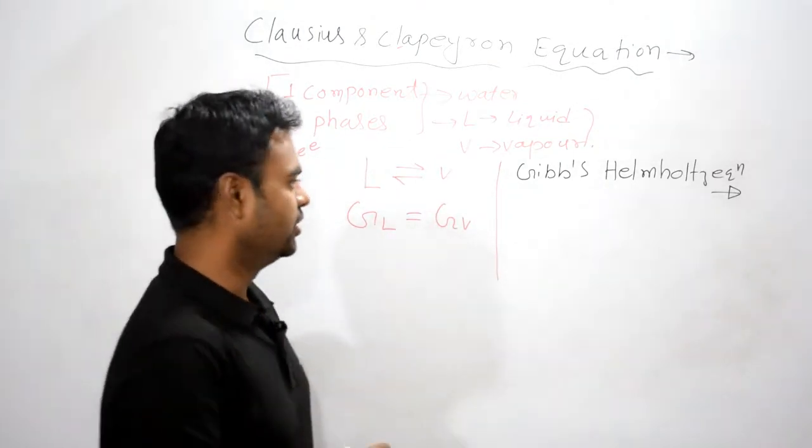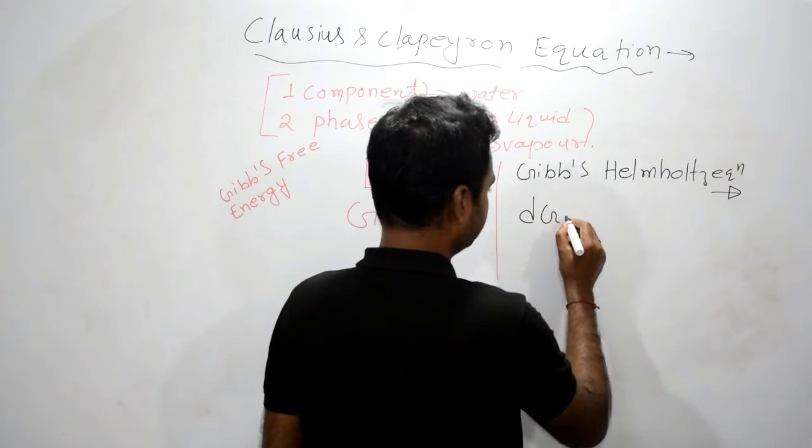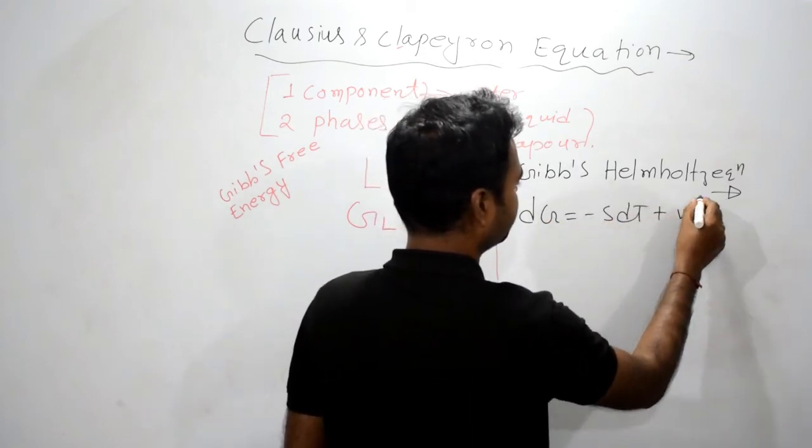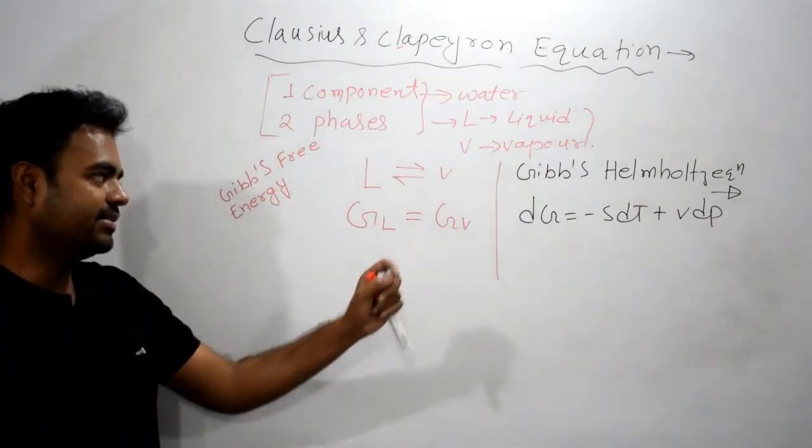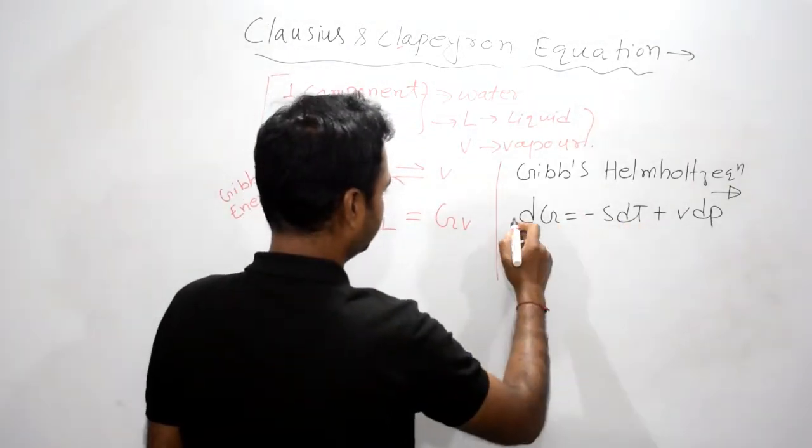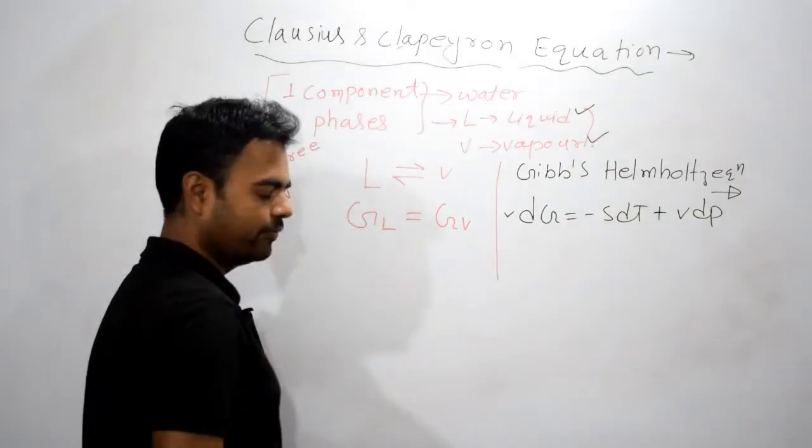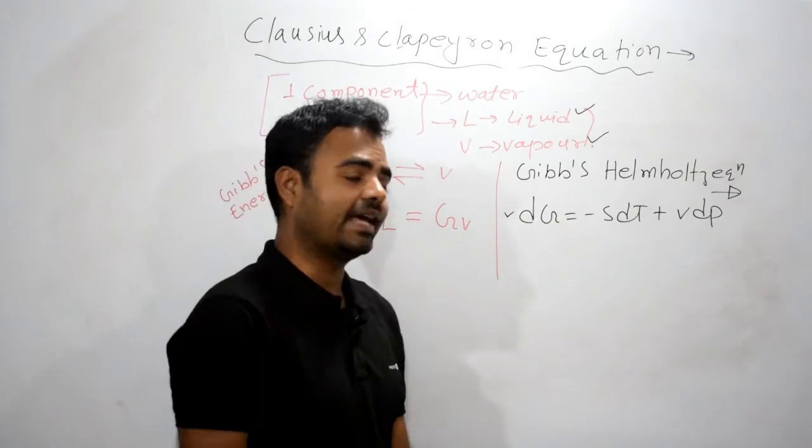So what is it saying? dG equals minus SdT plus VdP. Now we need to write this equation in two forms: one in liquid form, another in vapor form. One most important point: this equation is applicable for reversible as well as irreversible processes.